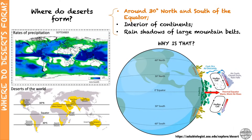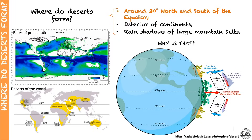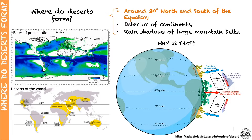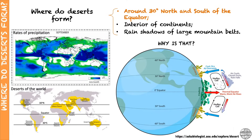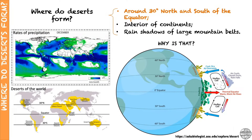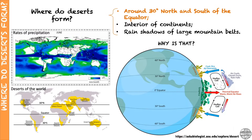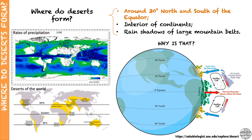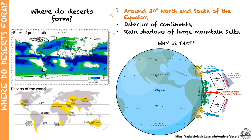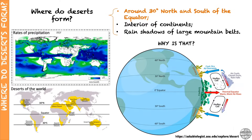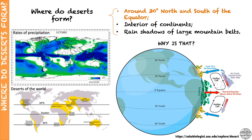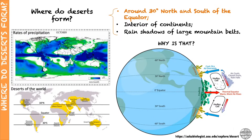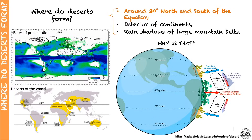At around 30 degrees south and 30 degrees north, air masses tend to descend towards the planet's surface, so these regions will be dominated by dry air without much precipitation, and this creates the perfect environment for deserts to form. Take a look again at the map that shows the locations of the major deserts in our planet, and note how most of them are located around 30 degrees south and 30 degrees north.